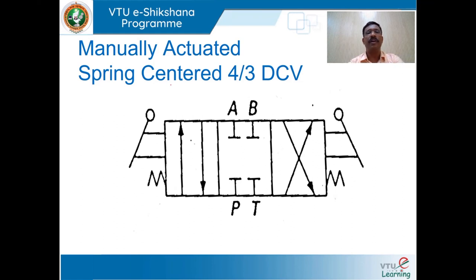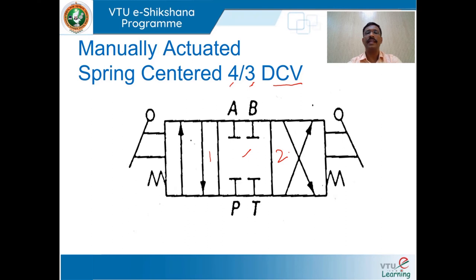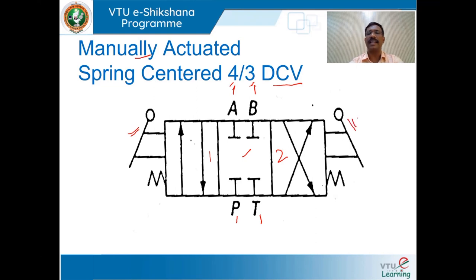We shall draw a symbol for a manually actuated spring-centered four-way three-position directional control valve. Three-position means three squares — position O, position 1, position 2. Four-way: P connected to pump line, T to tank line, and output ports A and B connected to the cylinder. Manually actuated using a lever; spring-centered means springs are on either side of the spool so when the lever is not operated, the valve moves to the center path configuration and flow shuts off.